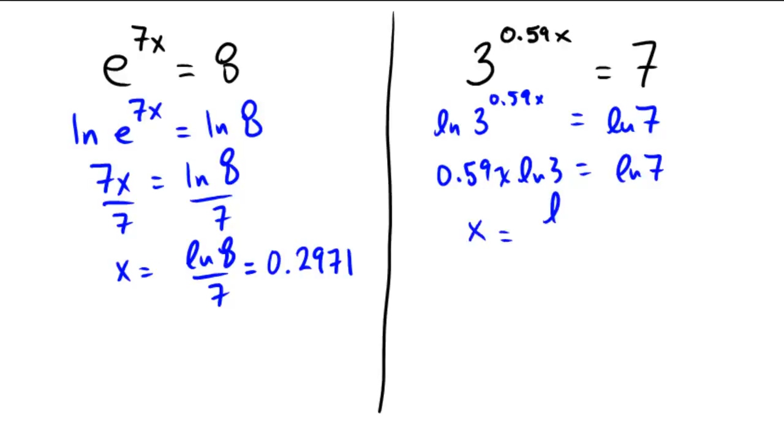So after dividing, we'll get an ln of 7 over a 0.59 with an ln of 3. So last time, back to the trusty calculator here.